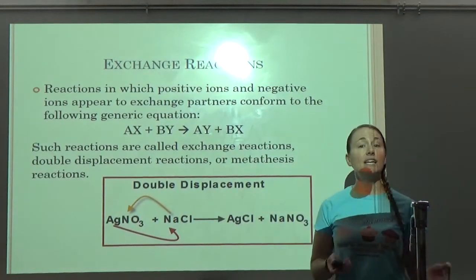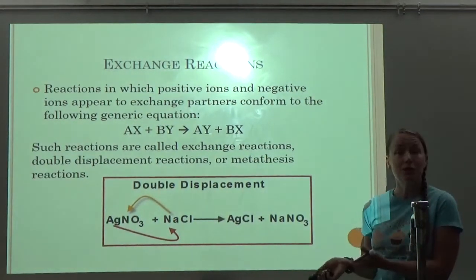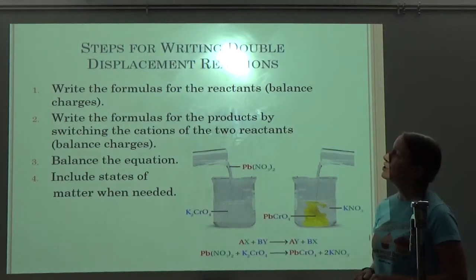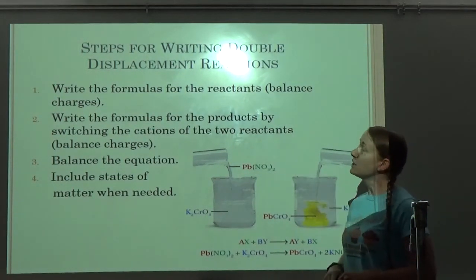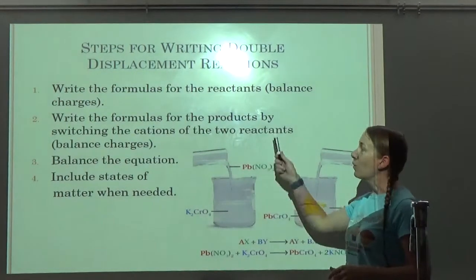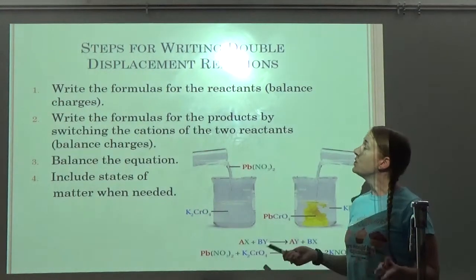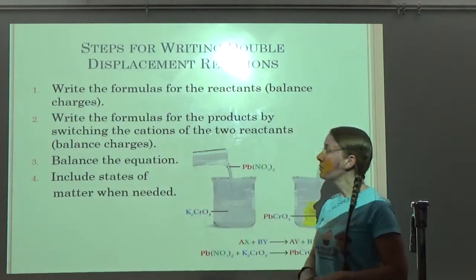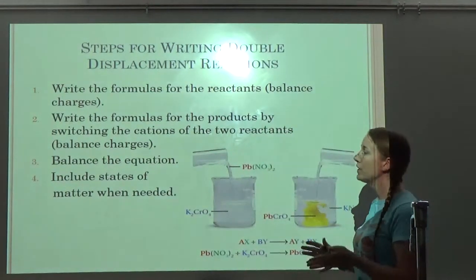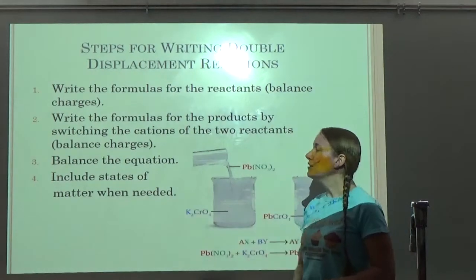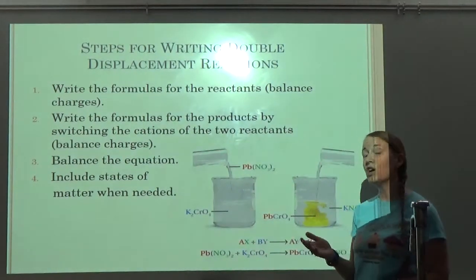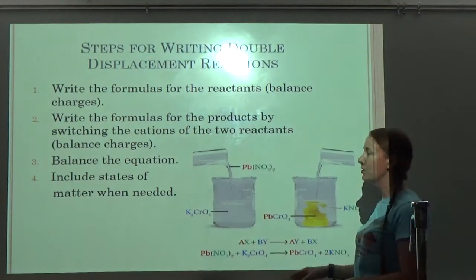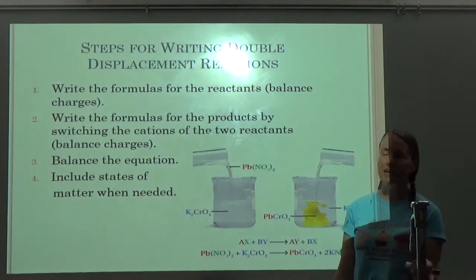Steps for writing double displacement reactions: write the formula for the reactants — don't forget to balance charges. Write the formula for the products by switching the cations of the two reactants — don't forget to balance charges. Then balance the whole equation. Include states of matter when needed, especially if they're asking about precipitates or net ionic equations. States of matter are: solid, liquid, gas, or aqueous.